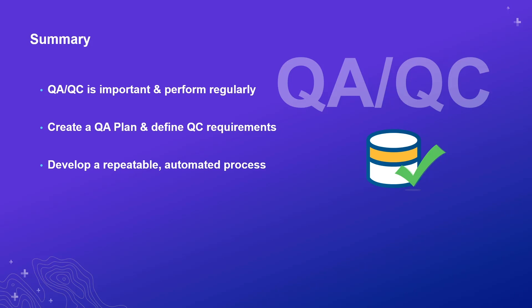To summarize what we talked about today: QAQC is important and should be performed regularly. Your data needs to support your GIS applications and business systems, and we are dependent on this data to make important decisions. It's not something you do once and are done — this is something you do on a continual basis. Create a QA plan, make it simple, and define your QC requirements in it, thinking about the applications and systems using the data. Create those validation checks and build a repeatable, automated process as much as possible, so that everyone on your team is performing the same set of validation, nothing is being missed, and it's done on a regular basis.